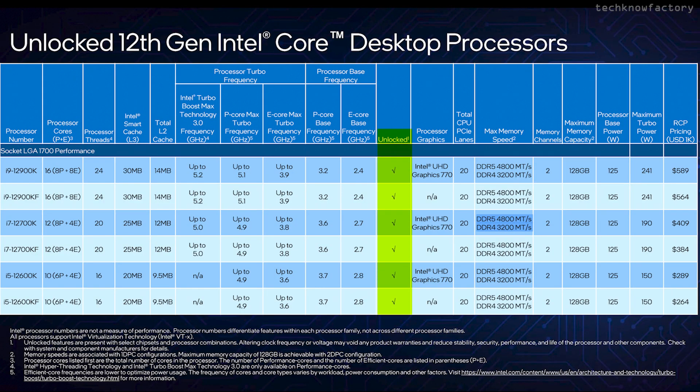All announced processors are K-Series and KF-Series, meaning they are unlocked and can be easily overclocked. You will need a Z-Series motherboard. 12th generation processors with integrated graphics feature Intel UHD Graphics 770, which is based on Xe architecture.